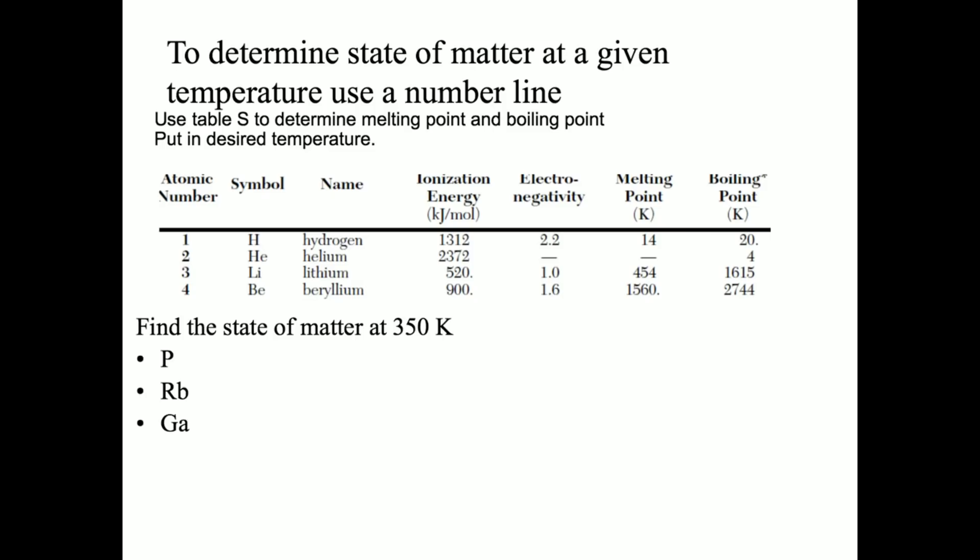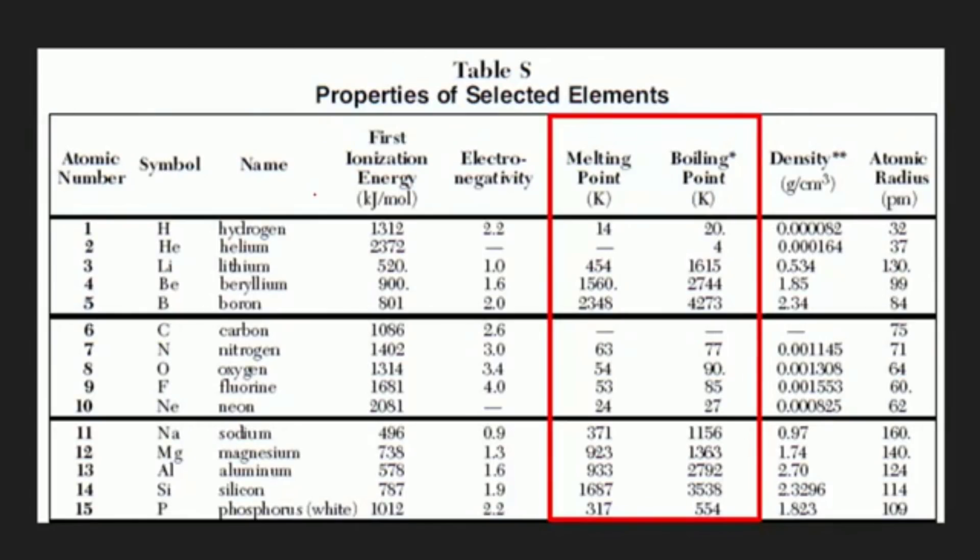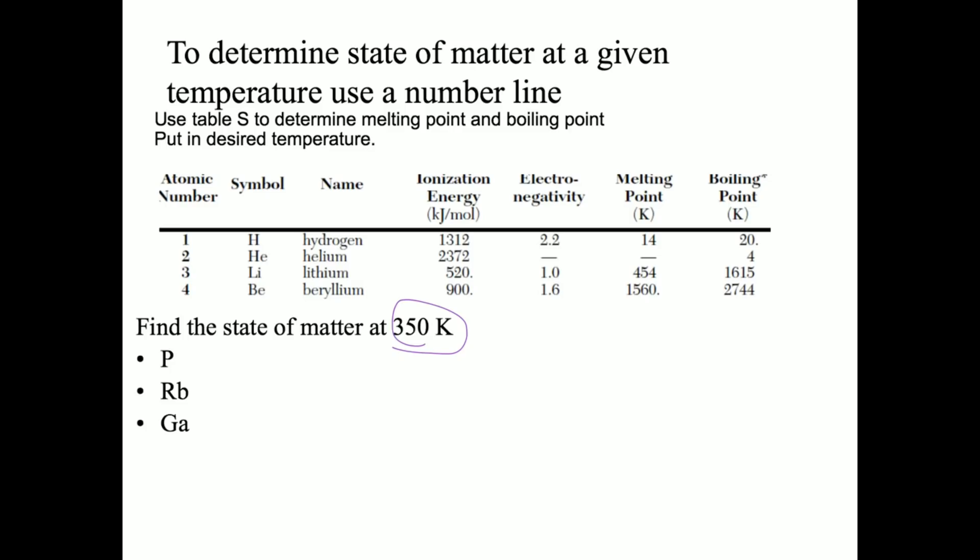Here is a review slide of something we covered in Unit 1, which is determining the state of matter at any given temperature. What we do is take the given temperature and insert it into a number line between the melting point and boiling point from reference table S. If that number falls before the melting point, you have a solid. If it is sandwiched between the melting and the boiling point, you have a liquid. And if it is greater than both the melting and the boiling point, you have a gas. If you are given the value of STP, use table A to find the temperature.